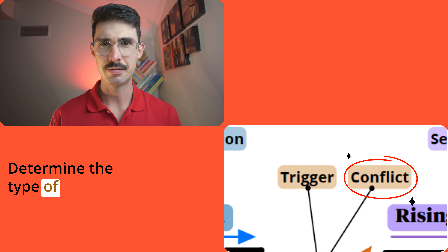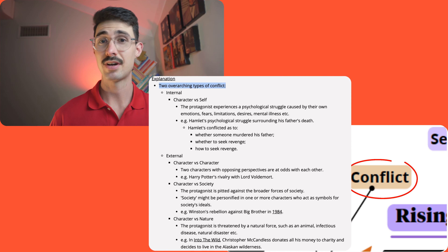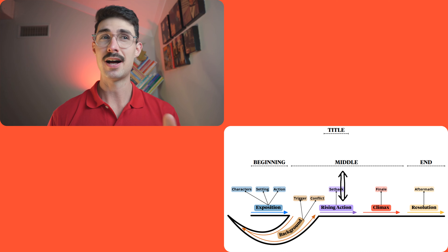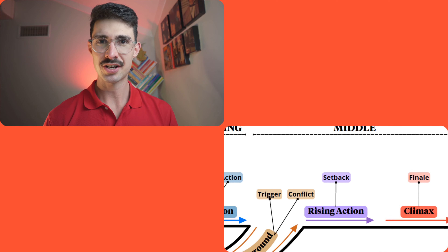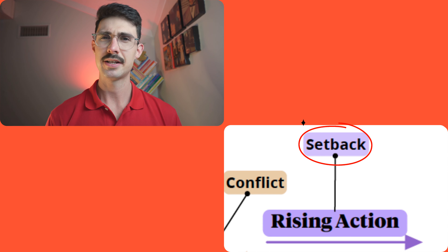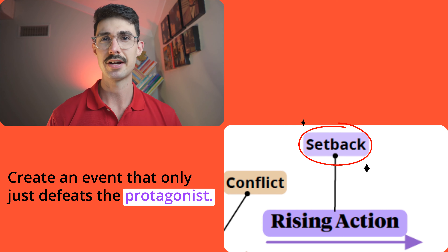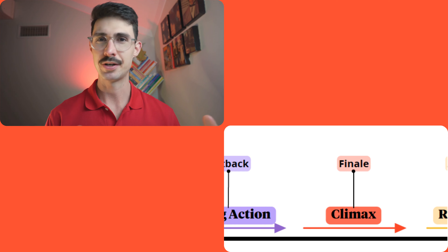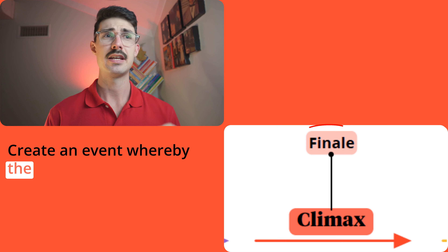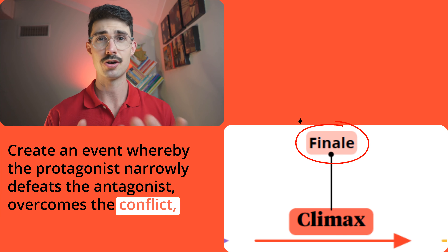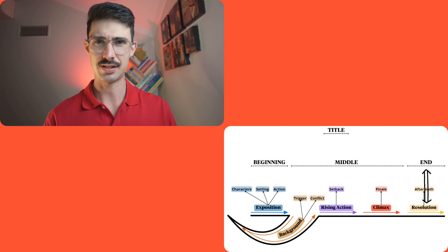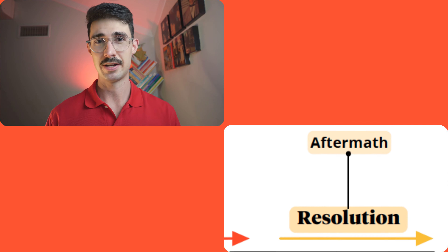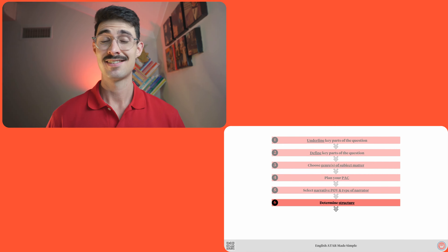The next element of the background section is the conflict — here you determine the type of conflict the protagonist faces. The next section is the rising action, which has just one element: the setback, where you create an event that only just defeats the protagonist. The final section of the middle part is the climax, which has one element — the finale — where the protagonist narrowly defeats the antagonist, overcomes the conflict, and accomplishes their mission. The next section is the resolution, the only section in the end part of the structure. Its one element is the aftermath, where you construct the affirmation of transformation.